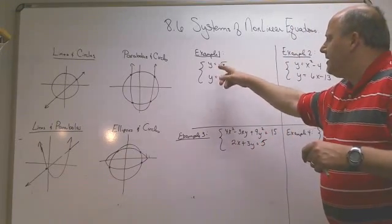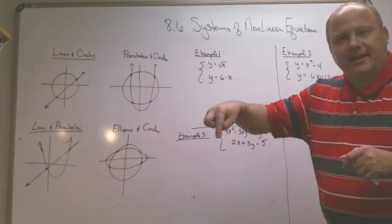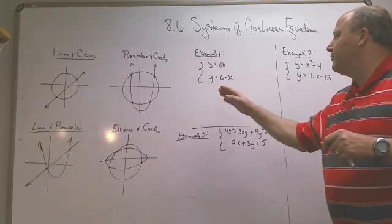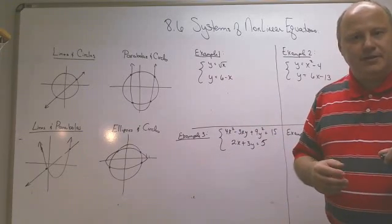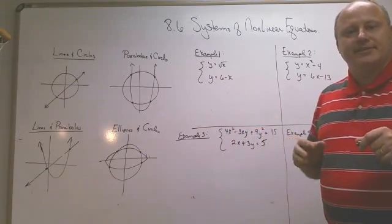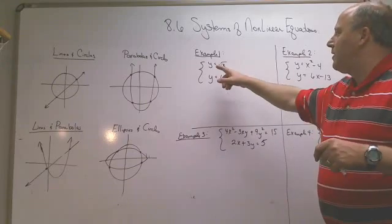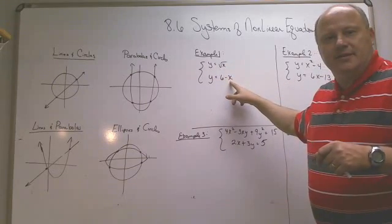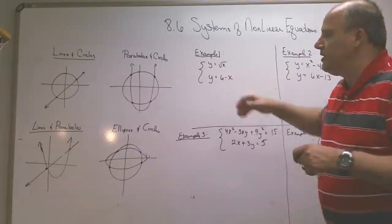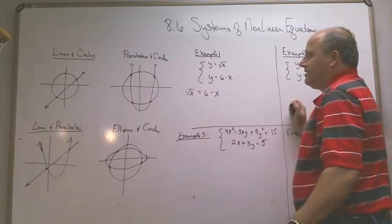My first example is y equals the square root of x, and most of you guys remember that one is the square root graph. It's kind of like that black little arc like this. And then 6 minus x is of course a line with a negative one slope and a y-intercept of 6. What I would do here is solve this by substitution. Since y equals this and y equals that, since y has to be the same in both cases, just set these two expressions equal to each other. So you have the square root of x equals 6 minus x.